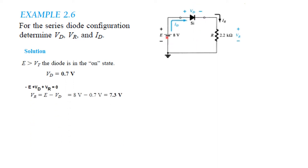Applying the KVL equation: minus E plus VD plus VR equals 0. Therefore VR equals E minus VD. E is 8V, VD is 0.7V, so VR equals 7.3V. Now for current: ID equals IR equals VR over R. VR is 7.3V, R is 2.2 kilohms, therefore ID is approximately 3.32 mA.